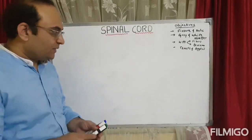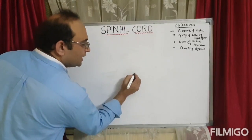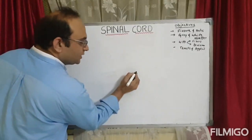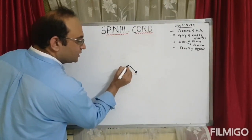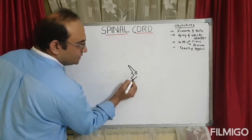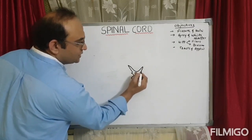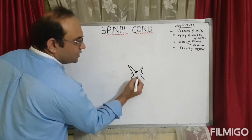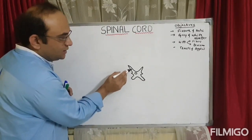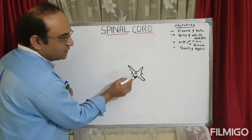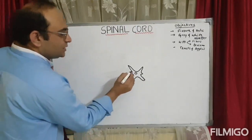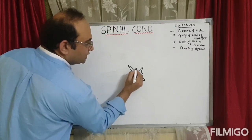To draw the cut section of the spinal cord, start with the central canal. Surrounding the central canal is the gray matter. The gray matter shown here is of the thoracic segment, so it is H-shaped or butterfly-shaped. The gray matter surrounding the central canal is comma-shaped on each side, and both comma-shaped gray matter regions are connected by a transverse gray commissure.